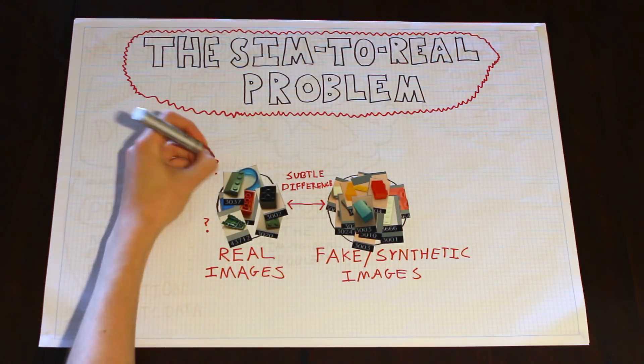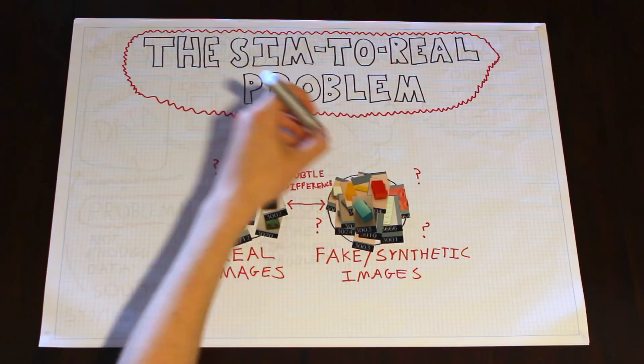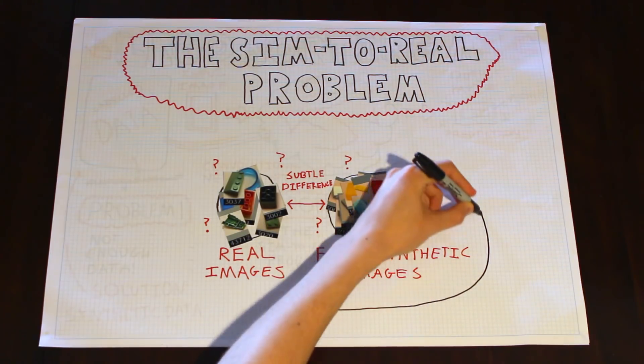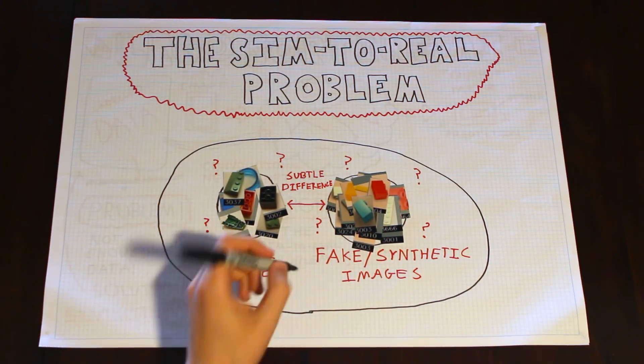Right now, the sim-to-real problem is considered pretty much unsolved by researchers. But luckily, in 2017, a paper was published which gives us a really helpful technique. It's called domain randomization. The gist of it is, let's stop trying to make our synthetic images match the real images perfectly. Instead, let's expand the boundaries of the type of image that we're able to generate.